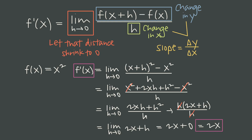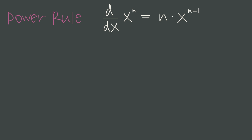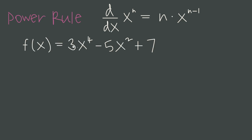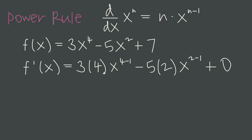Doing this algebra is powerful and will work every time, but it's way too slow — so now we need to learn some shortcuts. The first is the power rule for derivatives, which lets us quickly differentiate power functions. When we have x to the n, we simply multiply n by the coefficient, bring that exponent down in front, and subtract 1 from the exponent. So the derivative of 3x⁴ is 3 times 4 times x to the 3, and the derivative of 5x² is 5 times 2 times x to the 1. The derivative of a constant is always 0. Simplifying gives us 12x³ minus 10x — that's the derivative of the original function f.